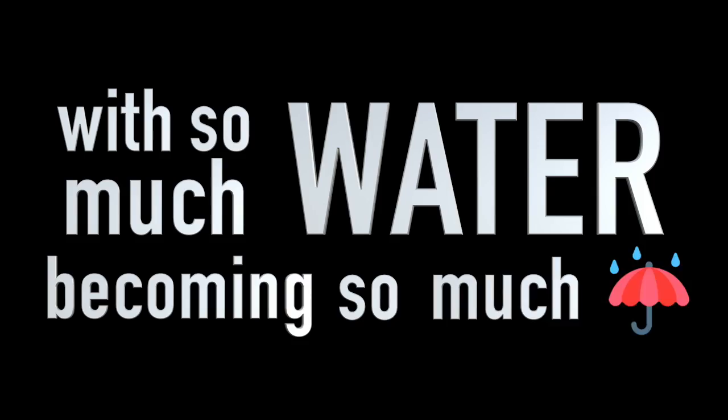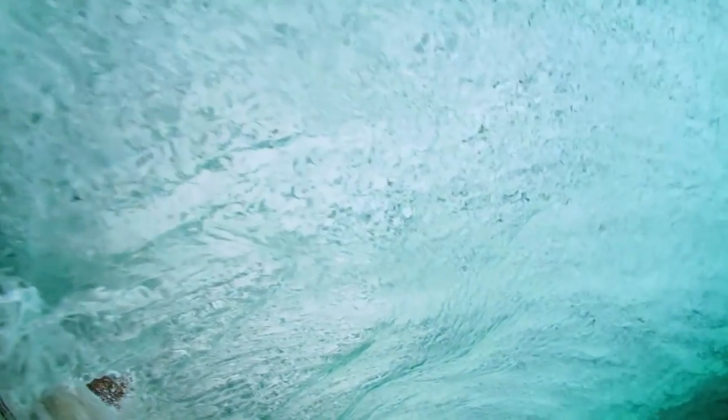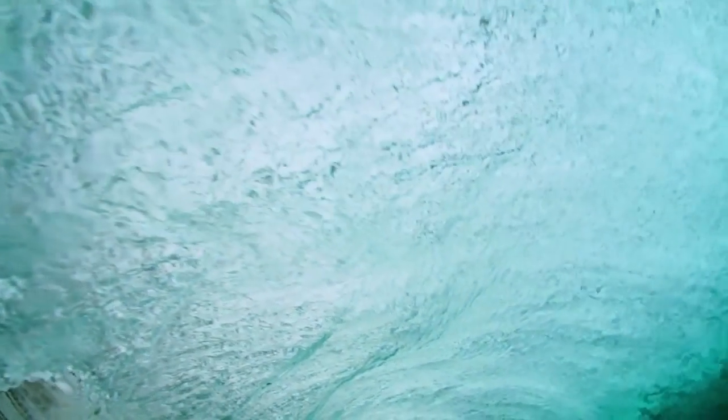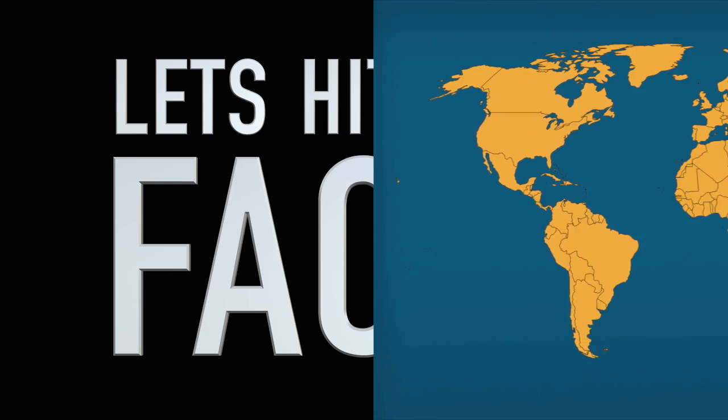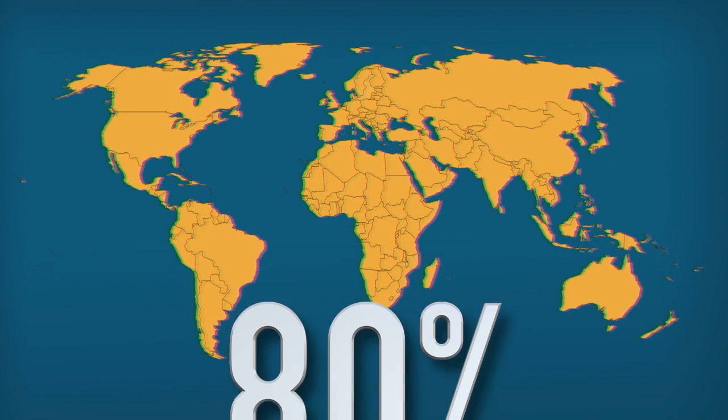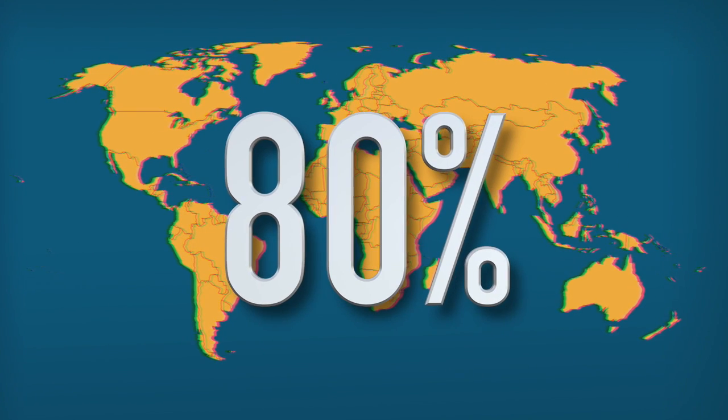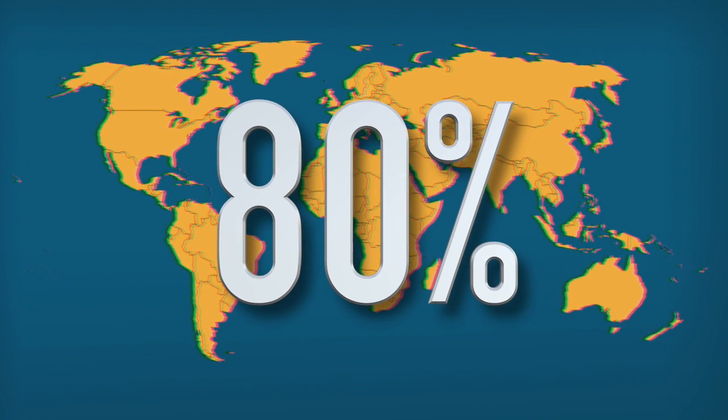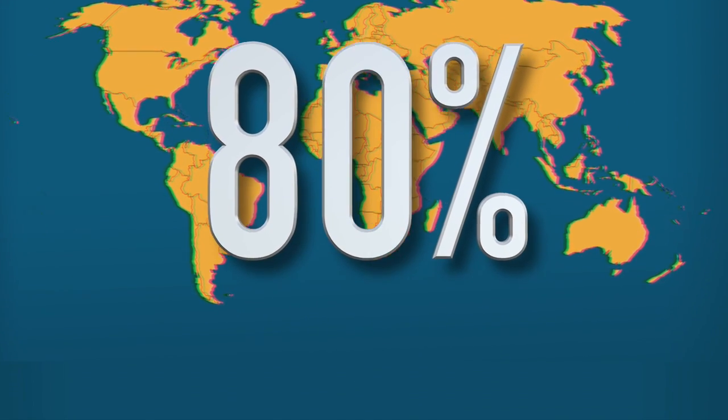So it begs the question: with so much water becoming so much rain, why is there a lack of drinking water and such a demand for it in places across the world? Let's hit some facts: over 80% of the Earth receives enough rain per year to have a sufficient water supply.